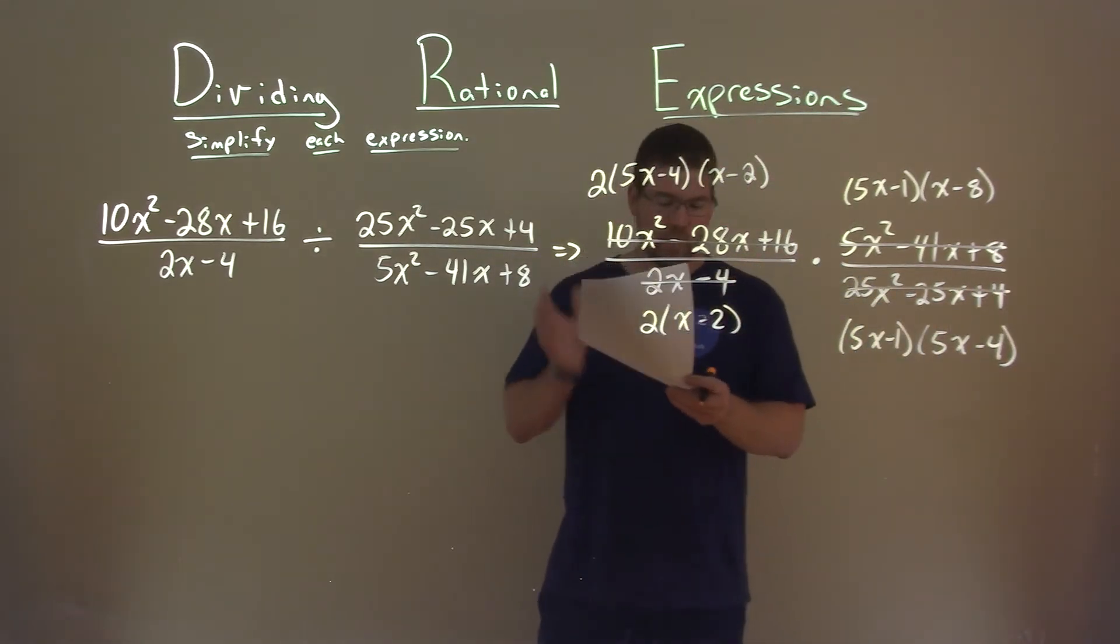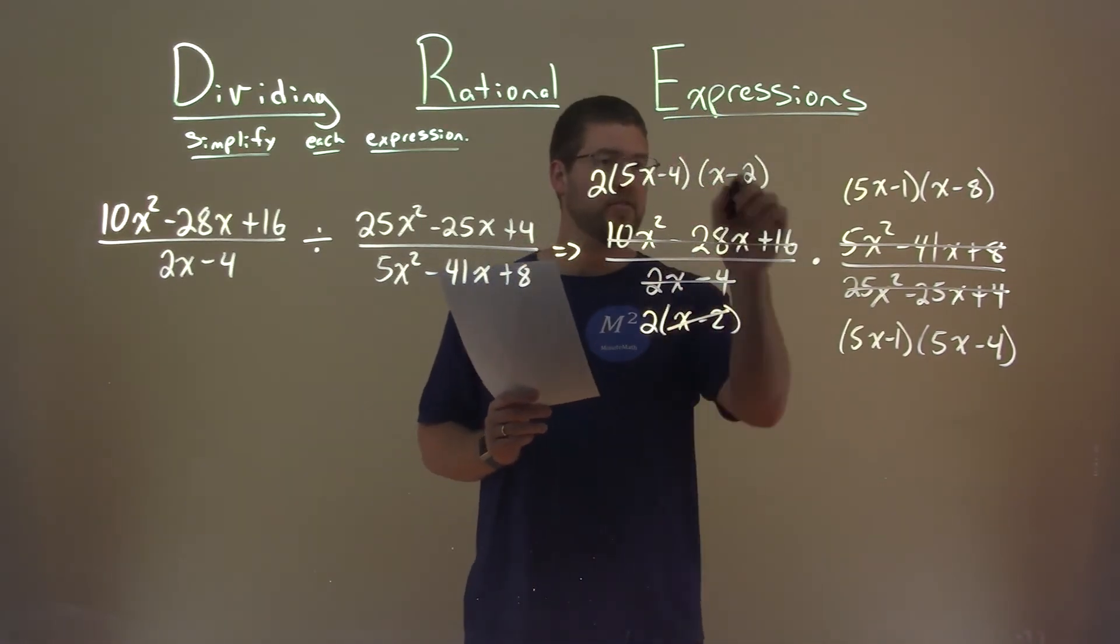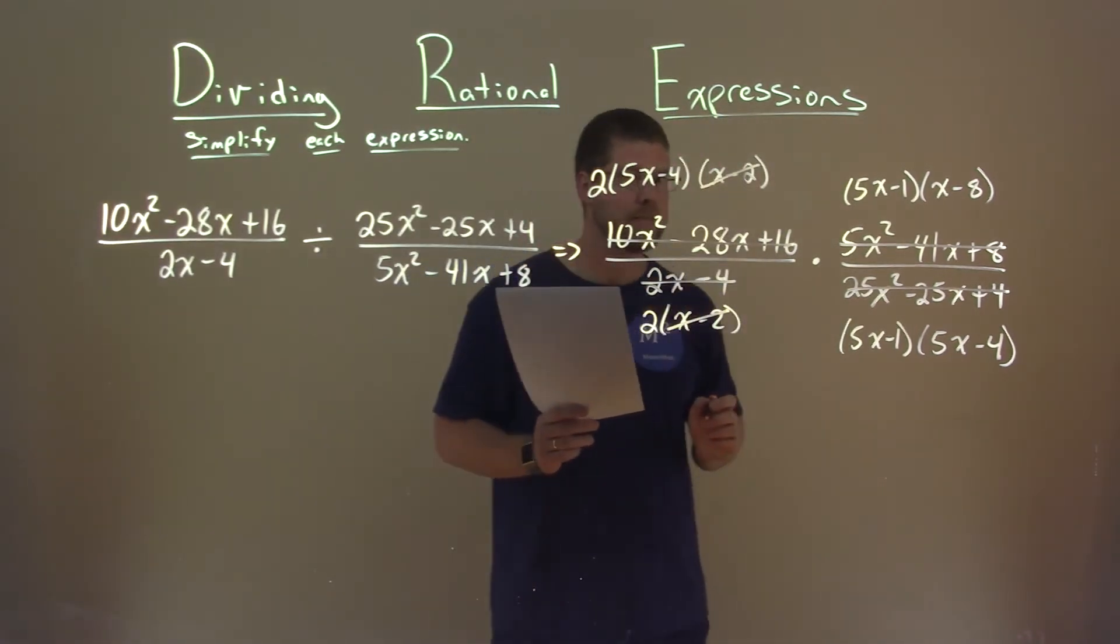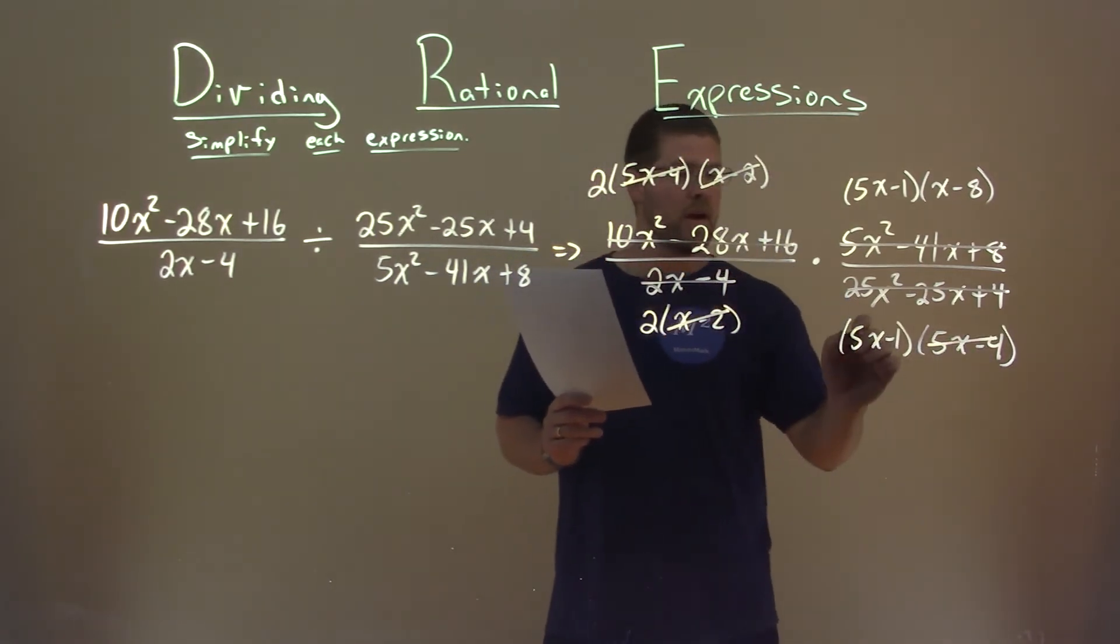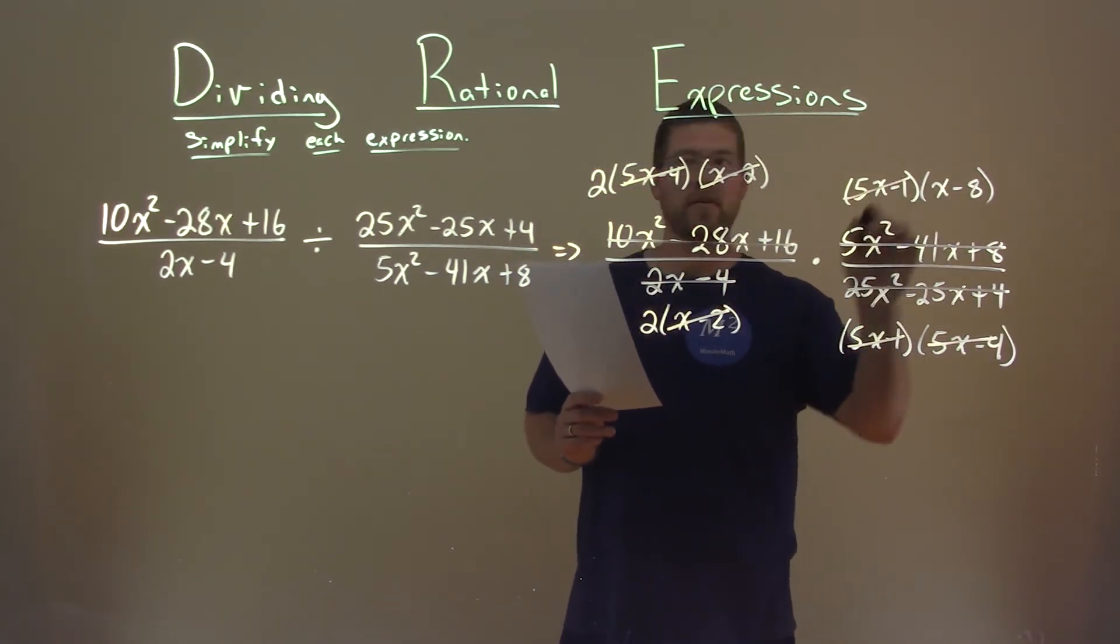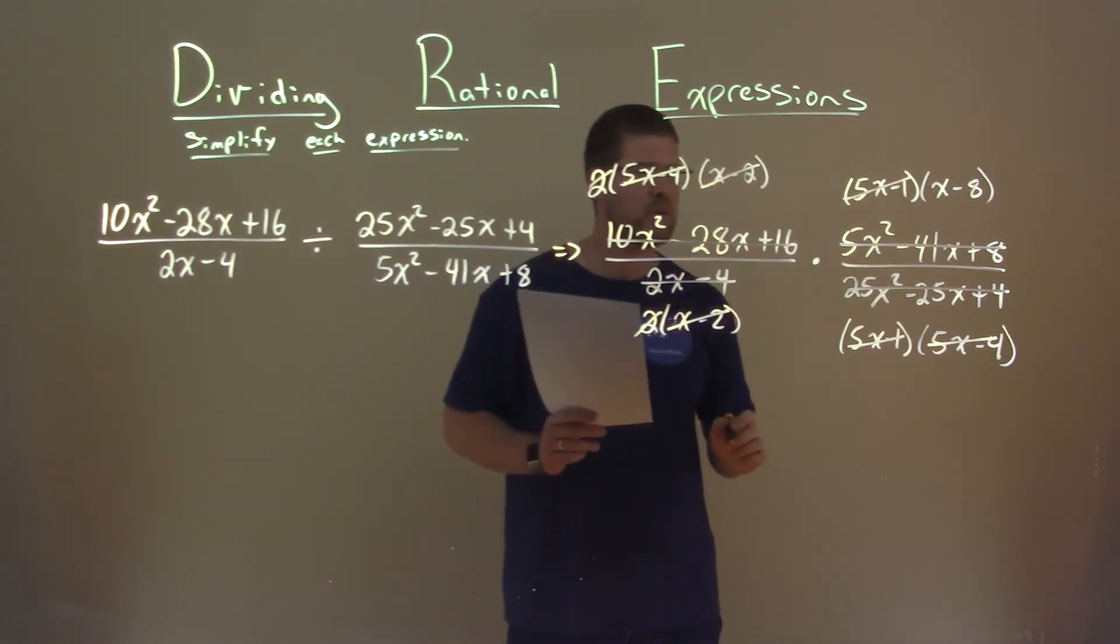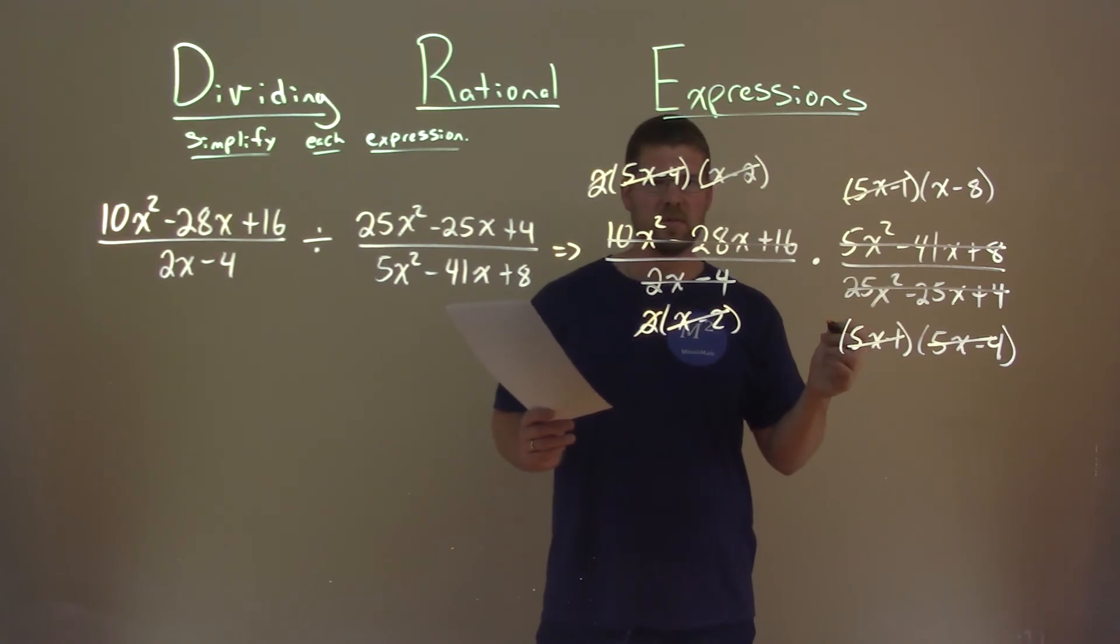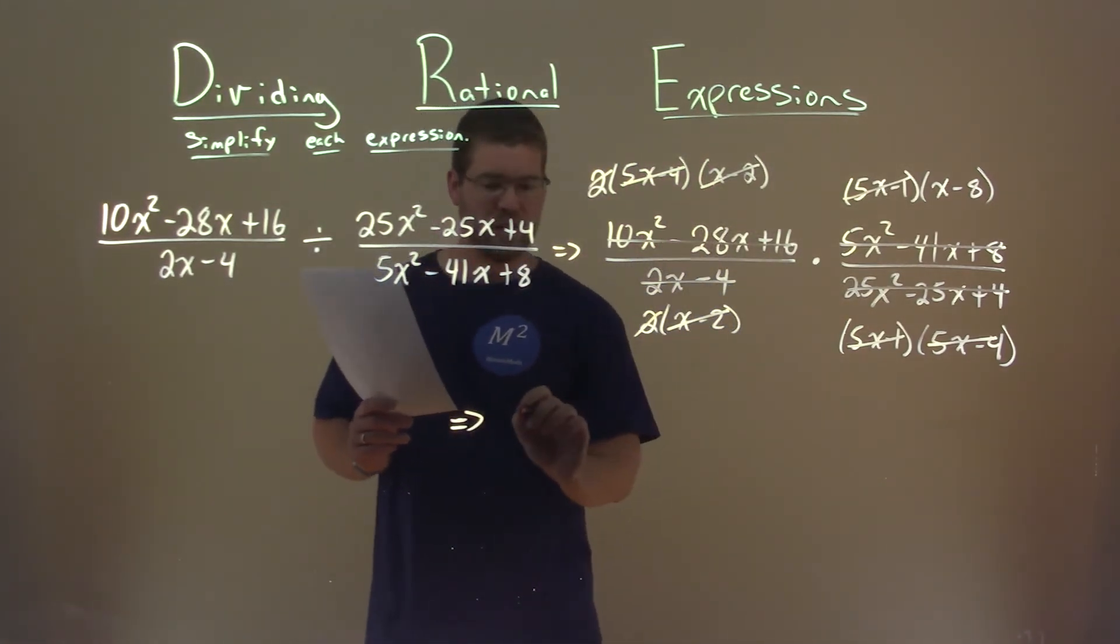So now what we want to do is see what we can eliminate from the numerator and denominator. I see an x minus 2 and an x minus 2 here. 5x minus 4 and 5x minus 4. 5x minus 1 and 5x minus 1, and I see a 2 and a 2. So what are we left with? Well, the numerator, the only thing I see is an x minus 8 there.